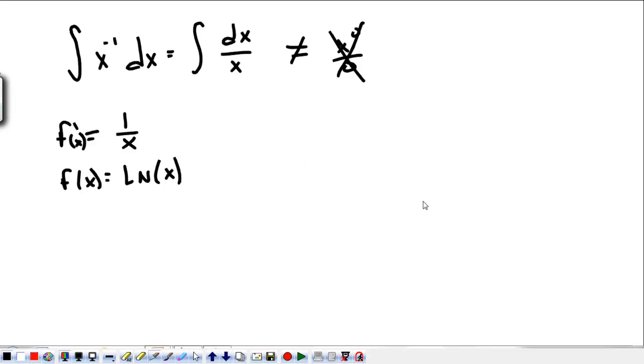Or, if we were to get more complicated, well, we'll get more complicated later. So, f of x is equal to the natural log of x. So, what we do is say that the integral of x to the negative 1 dx is equal to the natural log of x.